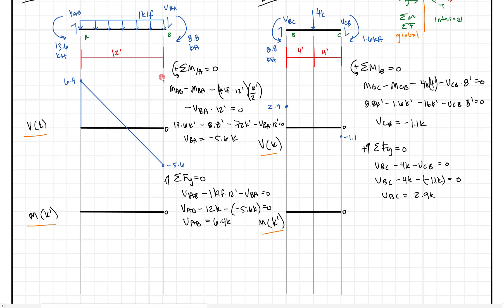You might be saying we didn't solve for the reaction at that point, but the reaction has to be 5.6 to bring us back to zero. We'll take a look at that a little bit later, but for now I'm just going to draw this line in to go back to zero and shade it in. And that's our shear diagram for beam AB.